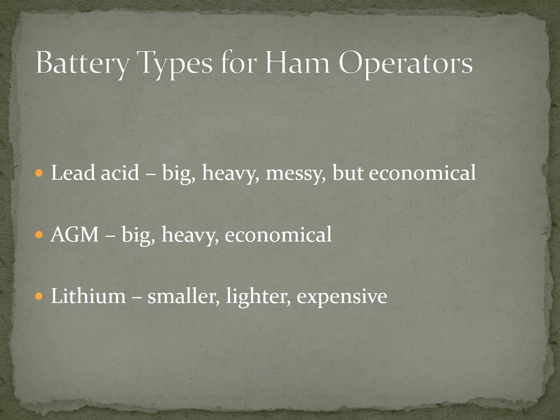Let's take a look at the different types of batteries available. Lead acid batteries are the type you've got in your car or use for a trolling motor in a bass boat — they're big, heavy, and messy, but economical and available everywhere. AGM stands for absorbed glass mat — they are big and heavy because they're lead acid, but economical and not messy since they are sealed, so you can use them inside without worrying about battery acid spilling. Another type many of us have started to use are lithium iron phosphate batteries — they're smaller, lighter, with really good energy density, but they are more expensive, costing about four times a typical lead acid battery.